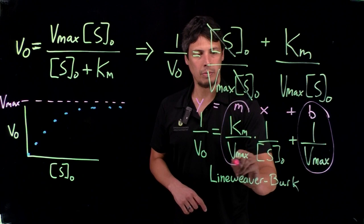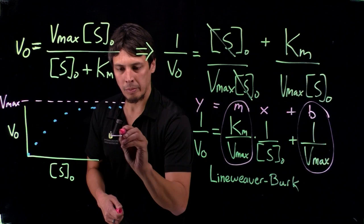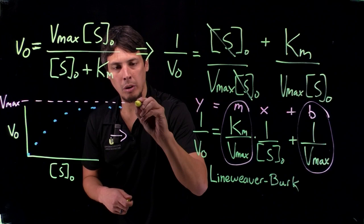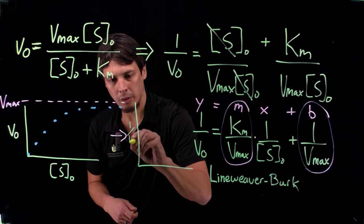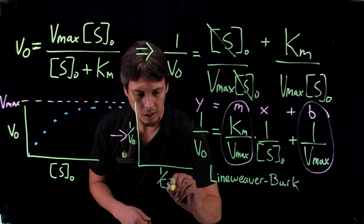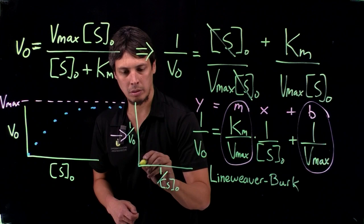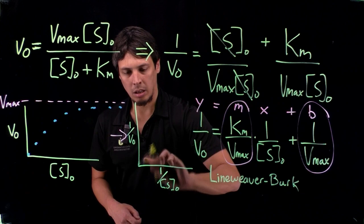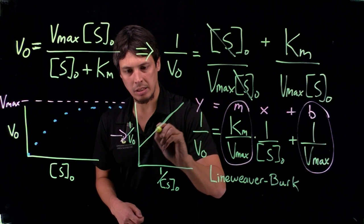If we do this transformation for Lineweaver-Burk, we're going to make a new plot which is 1 over V-naught versus 1 over the substrate concentration. This is going to be a line that crosses the Y-axis at some point.